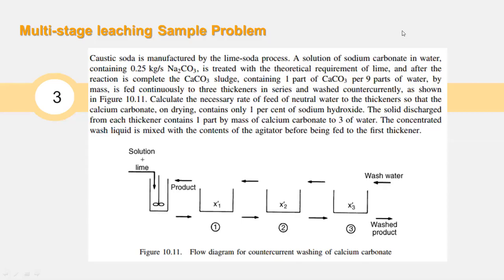Hi, this is a sample problem on multistage leaching using a series of thickeners. Caustic soda is manufactured by the lime-soda process. A solution of sodium carbonate in water containing 0.25 kilograms per second of sodium carbonate is to be treated with a theoretical requirement of lime, meaning it has to be based on a chemical reaction equation.